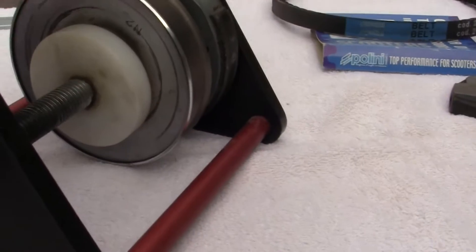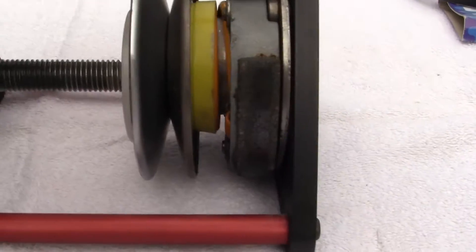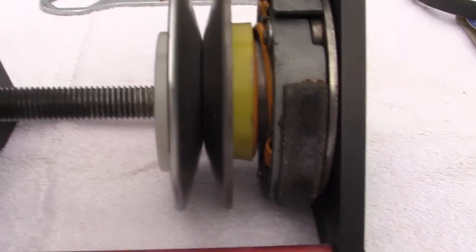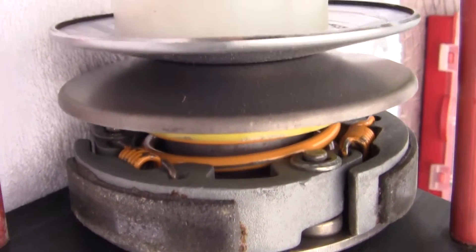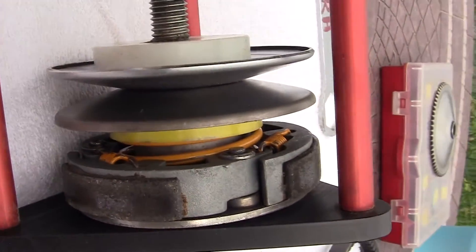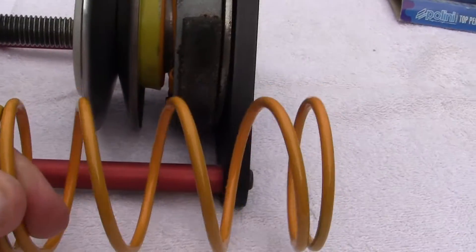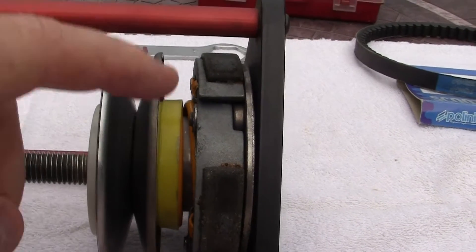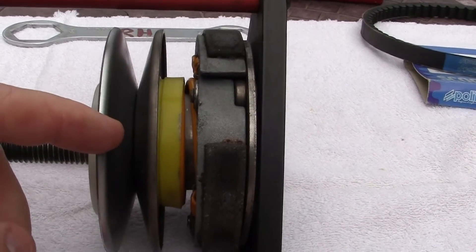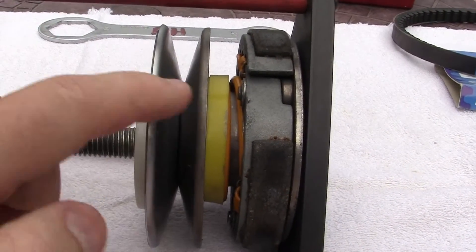So what we're going to do now is take this yellow spring inside there and replace it with this yellow spring. This one in here has lost its tension and therefore the clamshell is not opening.